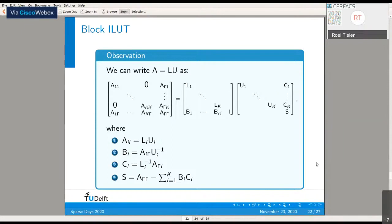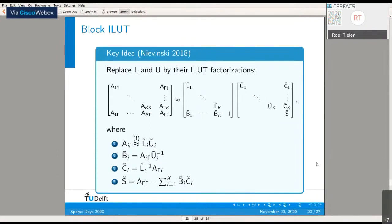One matrix consists mainly of the lower triangular part, and the other consists of the upper triangular part if we perform an LU decomposition. We define the B_i, C_i, and S such that multiplying them gives us back our original matrix. The key idea is to replace the LU factorization with an incomplete LU factorization, and in all other matrices like B_i, C_i, and S, we consider the incomplete versions.